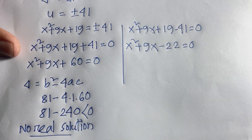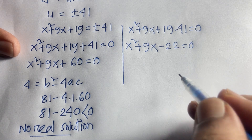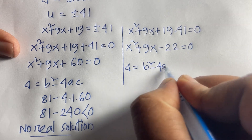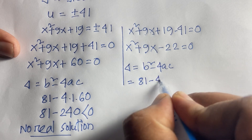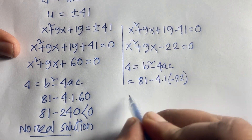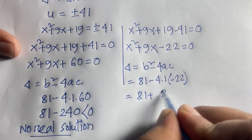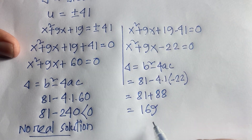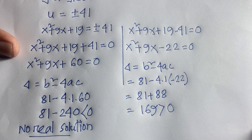For Case 1 (x²+9x-22=0), the discriminant is b²-4ac = 81 - 4(1)(-22) = 81 + 88 = 169, which is greater than 0, so real solutions exist.